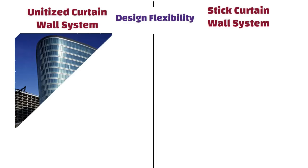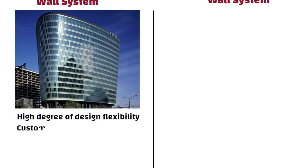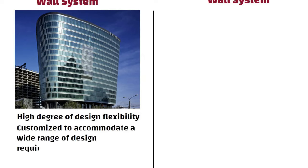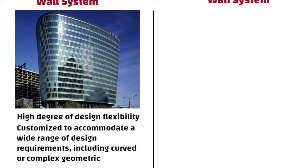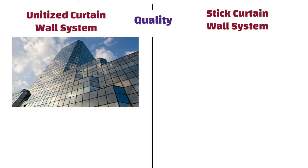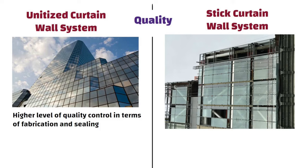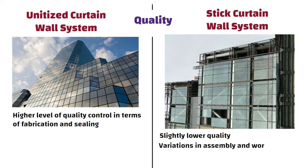Design Flexibility: Unitized curtain wall systems offer a high degree of design flexibility and can be customized to accommodate a wide range of design requirements, including curved or complex geometries. Stick systems offer a lower degree of design flexibility compared to unitized systems. Quality: Unitized curtain wall systems are considered to offer a higher level of quality control in terms of fabrication and sealing. Whereas, stick curtain wall systems are generally considered slightly lower quality, as they are constructed on site, which can lead to variations in assembly and workmanship quality.